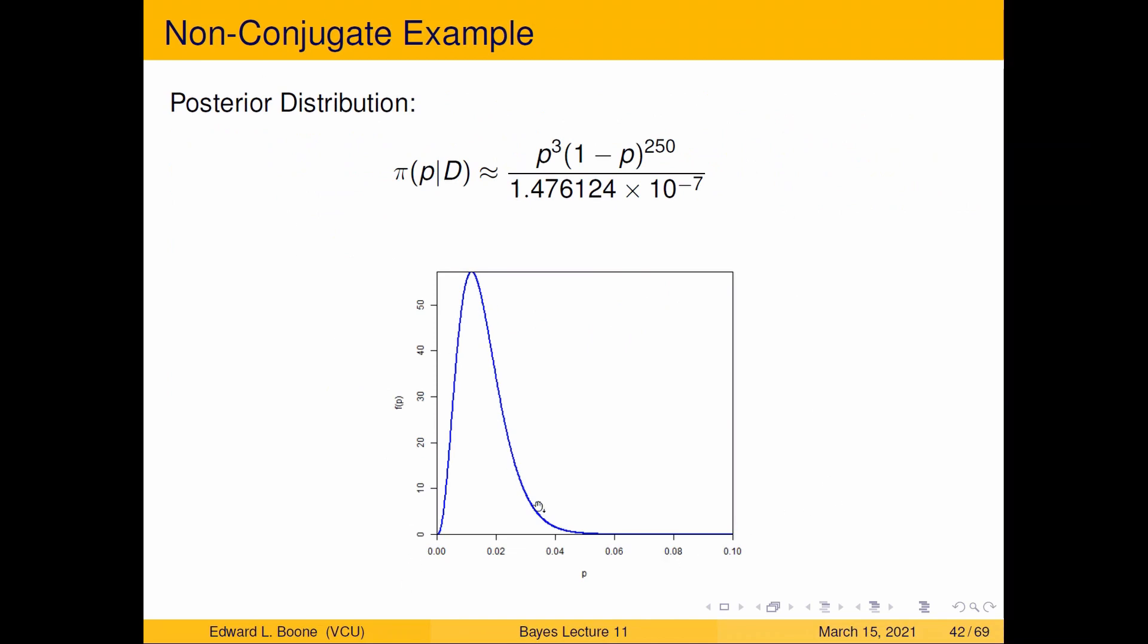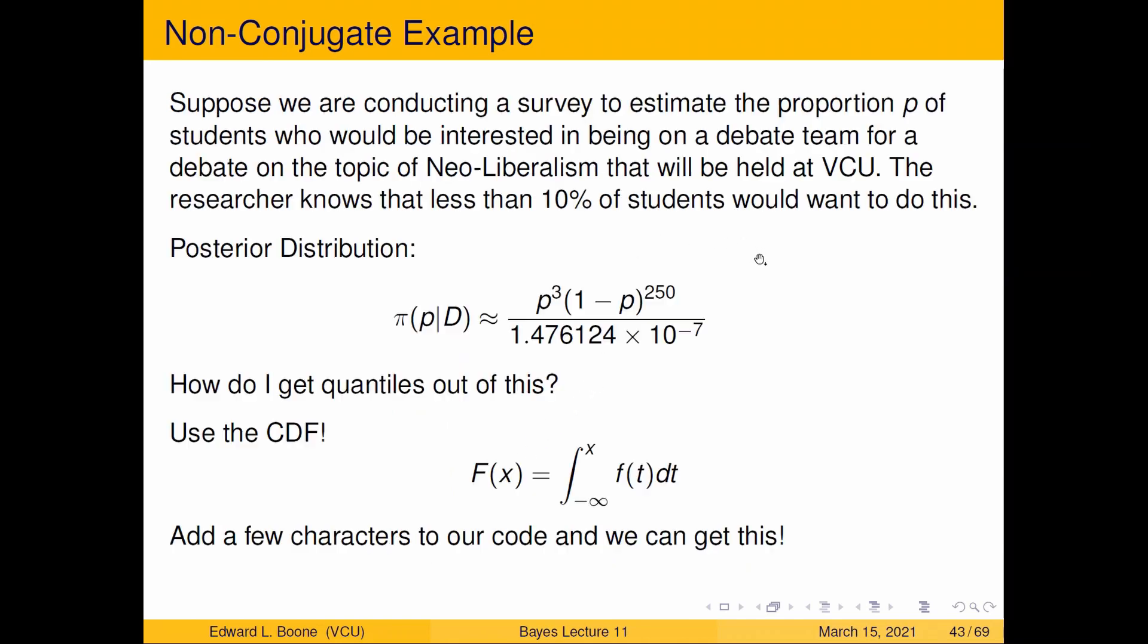Here's what the posterior distribution looks like, but in order to get the quantiles, we need the CDF. In order to get the CDF, we have to integrate from negative infinity to x of the function here, dt. So change just a few characters in our code and we can get the CDF.